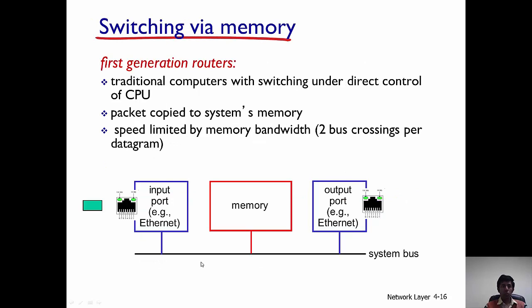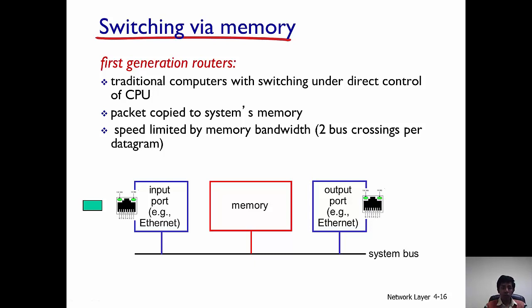In a memory-based switching fabric, used in first-generation routers, switching takes place directly under the control of the CPU, like traditional computers. Packets are copied into the system's memory and the speed is limited by the memory's bandwidth, which makes such routers relatively slow. The packet goes onto the wire, into memory, and from memory it can go to the output port.